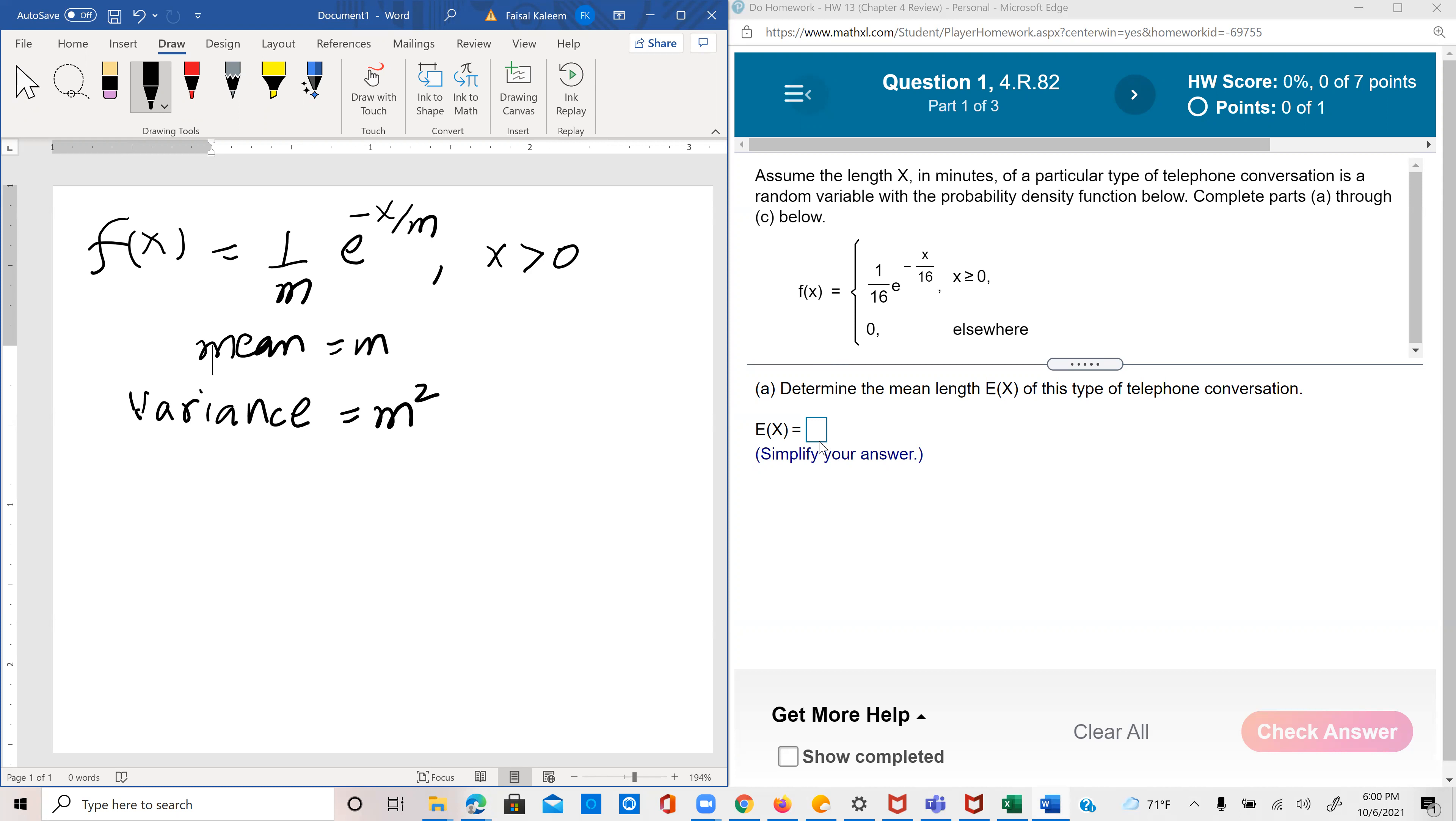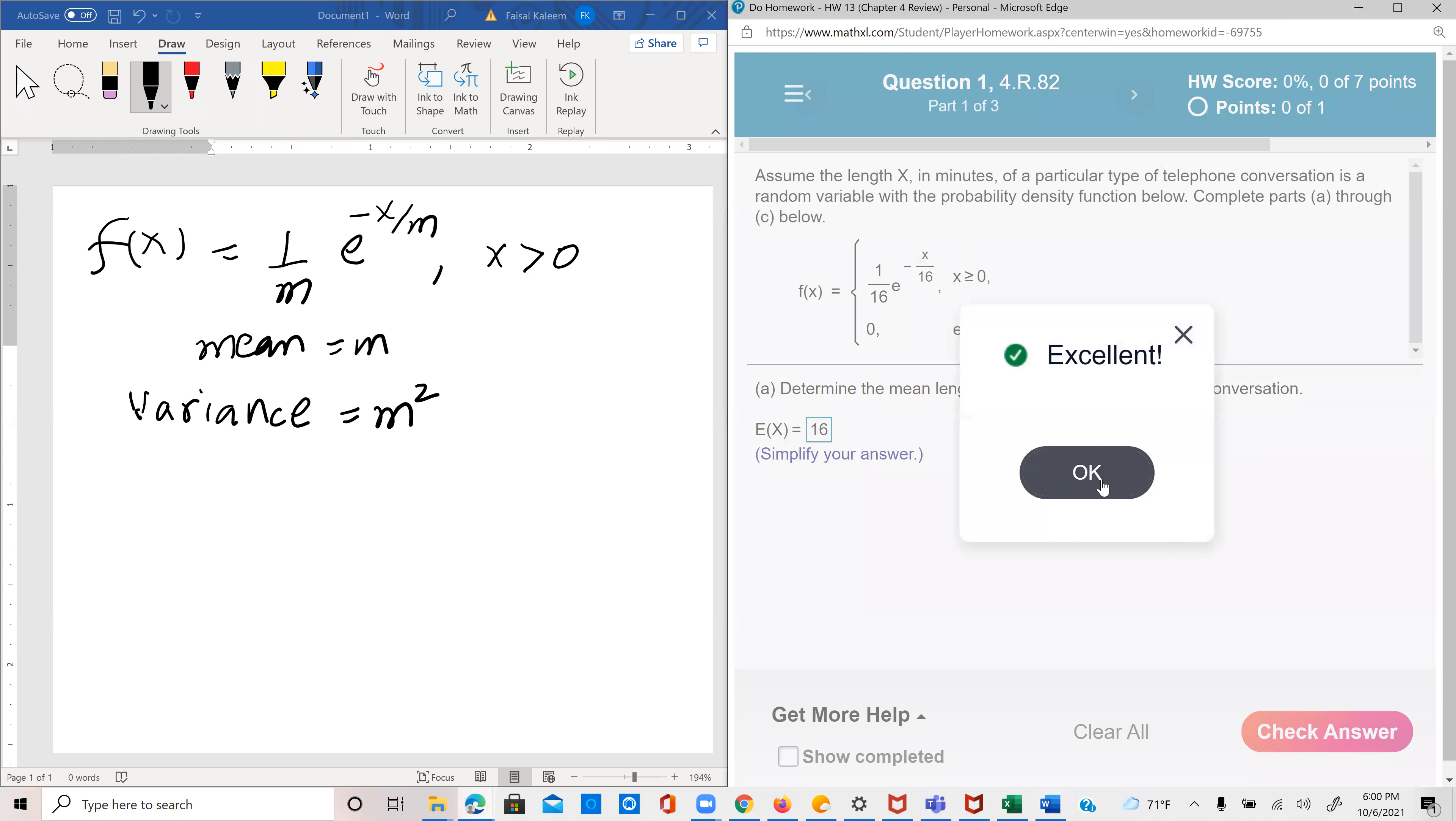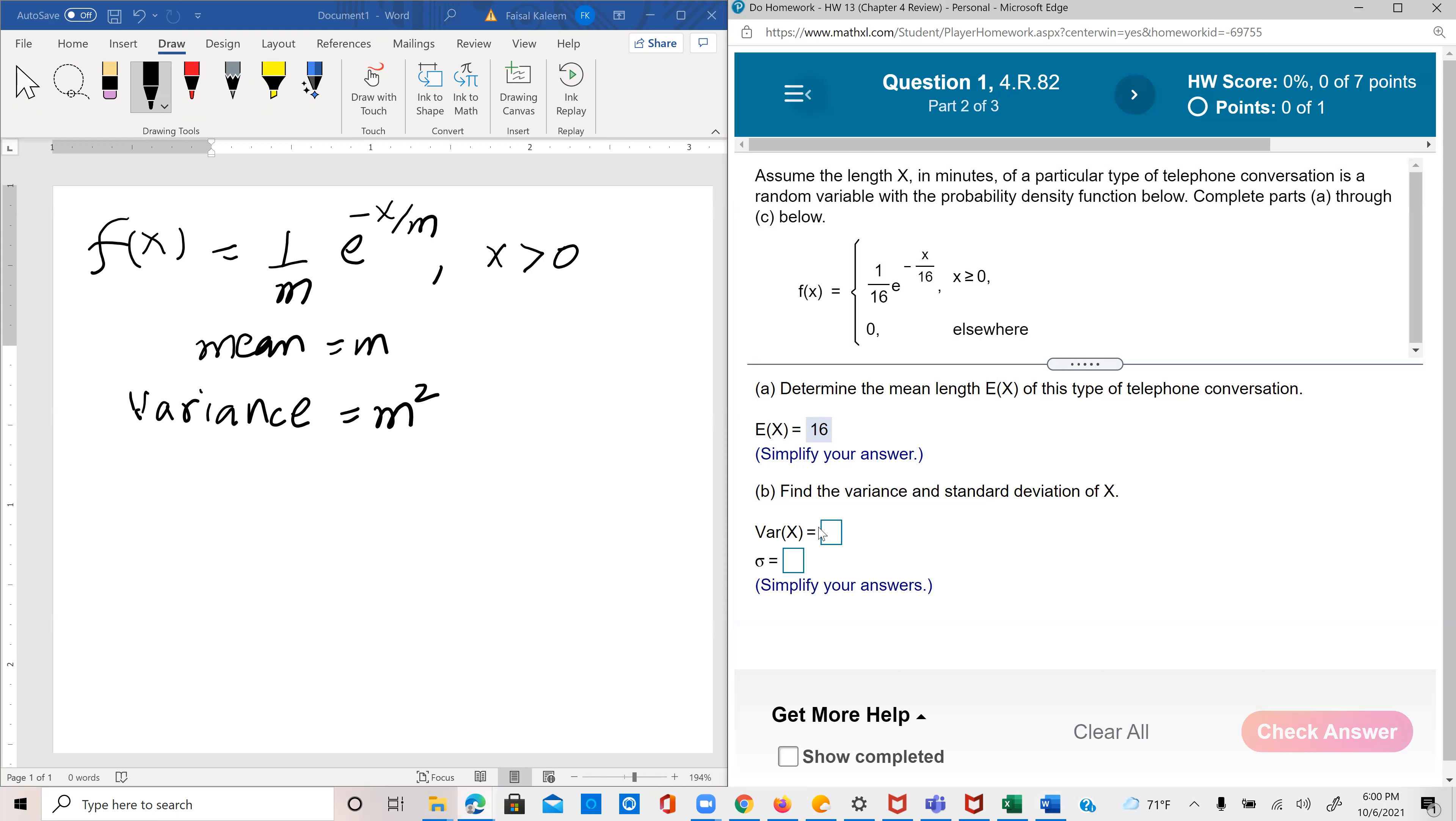So for this one, the mean will be 16, expected value of x is the mean of x. And the variance will be the square of 16, which is 256, and standard deviation is the square root of variance, which is 16.